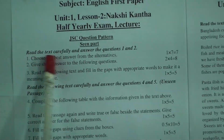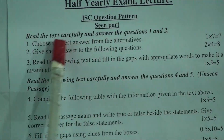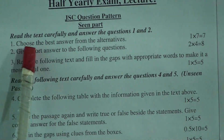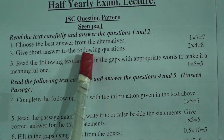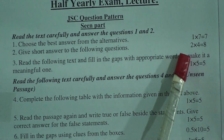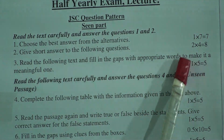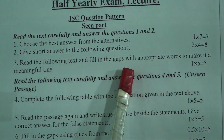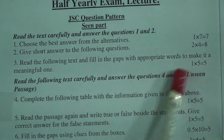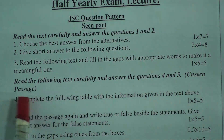Before starting class, let us see the JSC question pattern very quickly. English First Paper: first, the seen part — read the text carefully and answer questions one and two. Choose the best answer from the alternatives: seven marks. Give short answers to the following questions: eight marks. Read the following text and fill in the gaps with appropriate words: five marks.